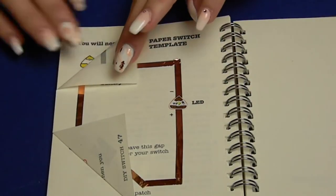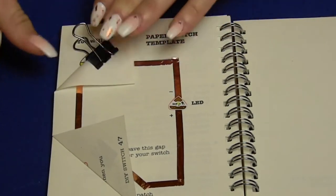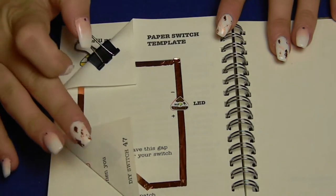Take your battery and place it in the fold, and use your paper clip to secure it. And then you've made your switch.